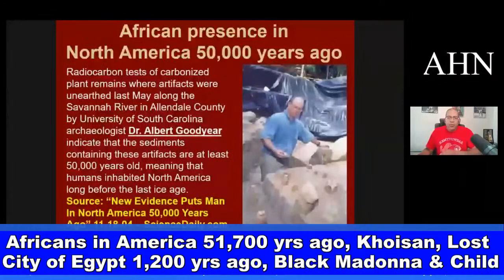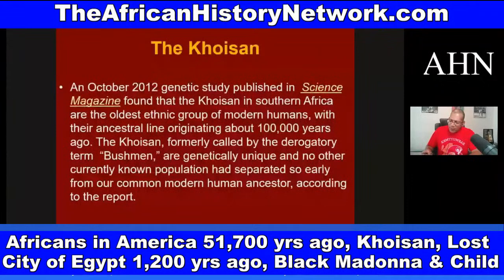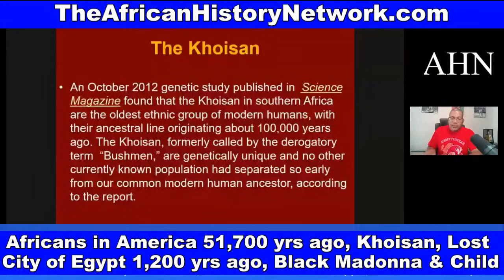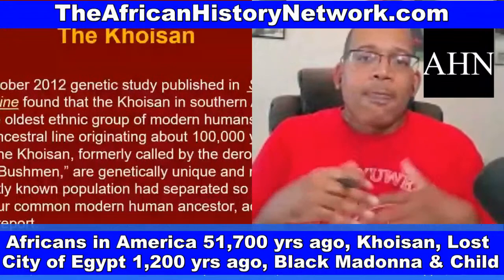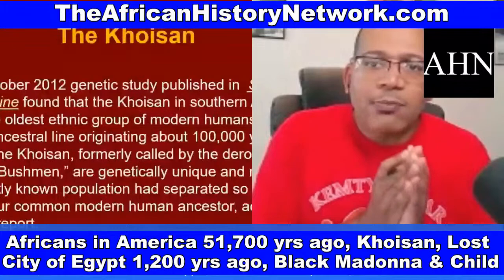This means humans inhabited North America long before the last Ice Age. The humans they're talking about are the Khoisan, who have the oldest DNA on the planet. They went all around the world and were here in the land we call the United States of America. This is before the transatlantic slave trade — I'm not saying the slave trade did not happen. What I'm saying is we have to understand thousands of years of history before it happened. Unfortunately, a lot of times in college classes and even during African American History Month, we start the history of African people in this country with conquest, shackles, and chains.